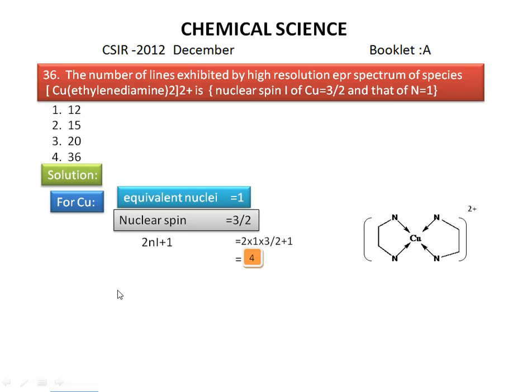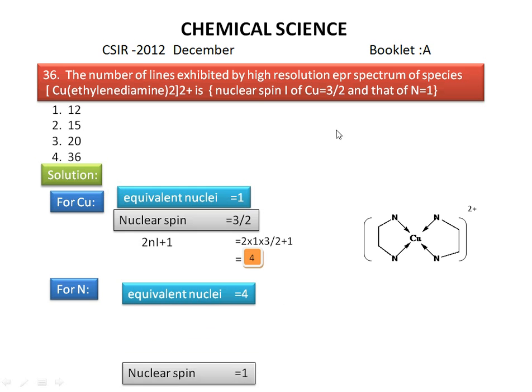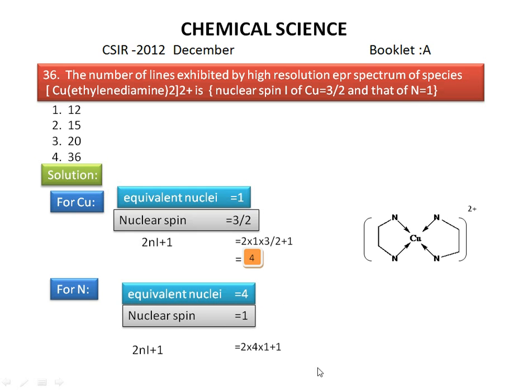Next we calculate the number of EPR lines for nitrogen. Here we have 4 equivalent nuclei, so n equals 4. Its nuclear spin is 1. Now substitute these two values in the equation: 2×4×1 + 1 = 9. We get total number of lines for nitrogen is 9.